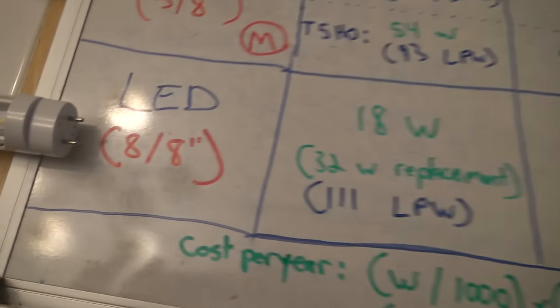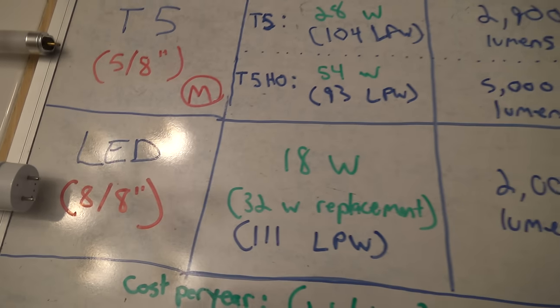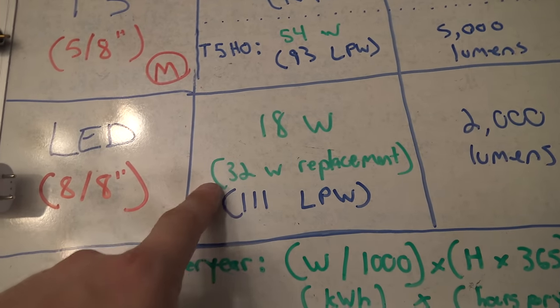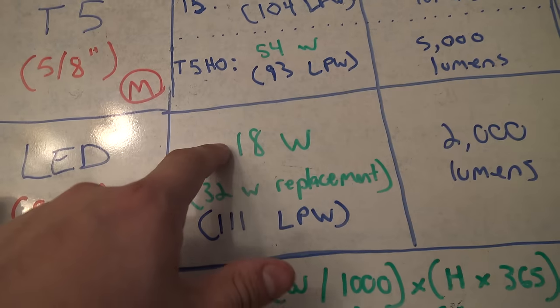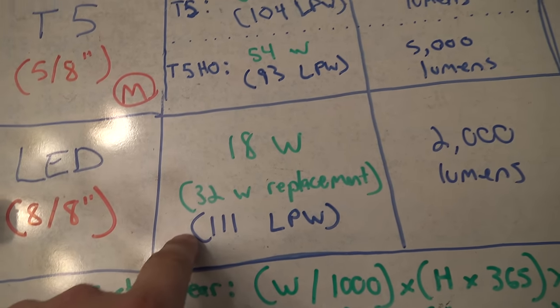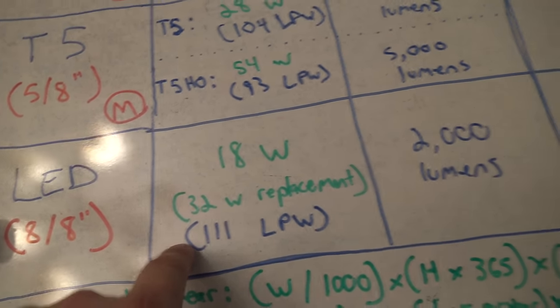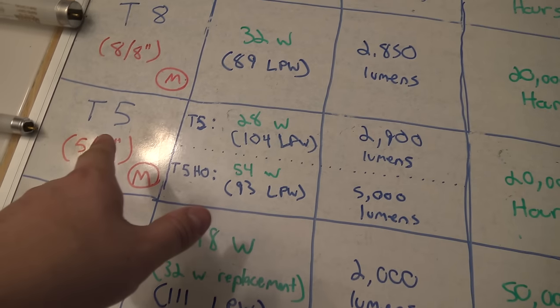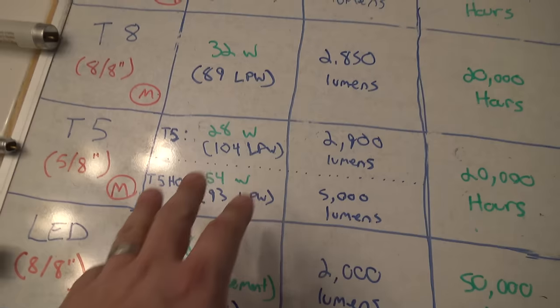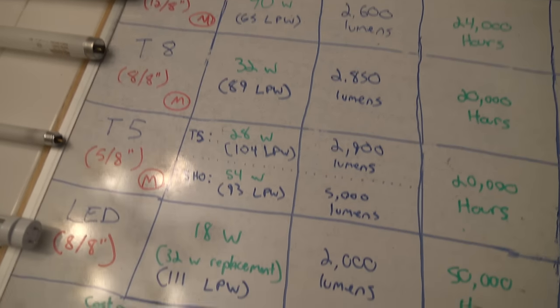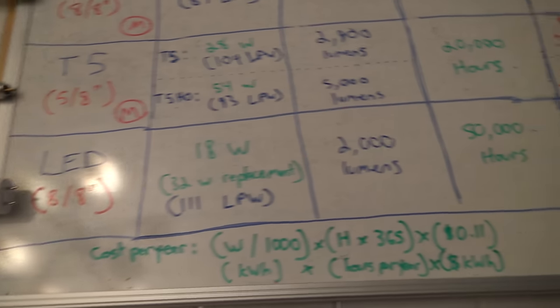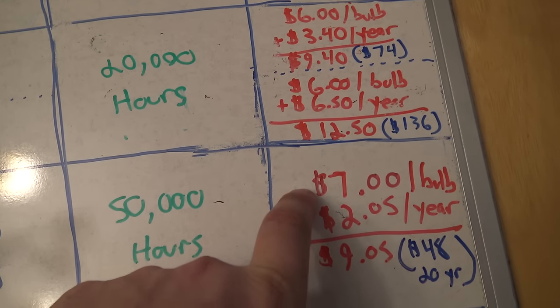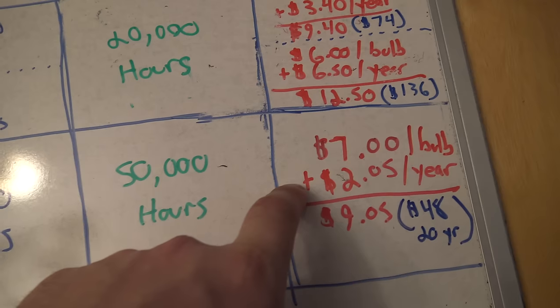And then when we jump over to LED, you can see the difference. So we're all the way down to 18 watts. It's basically sold as a 32-watt replacement, but it only uses 18 watts, which is 111 lumens per watt. We've got a 2,000 lumen light. The number of lumens isn't great compared to a T5 light or even a T8 light of the same size. So they are a little bit more dim, but they last more than twice as long.